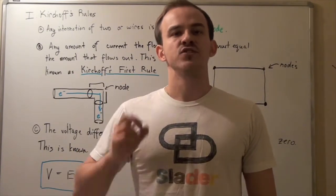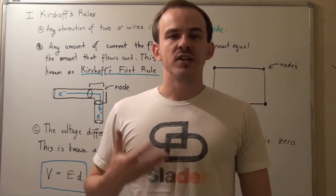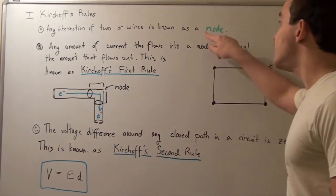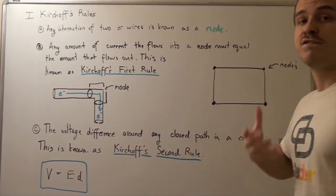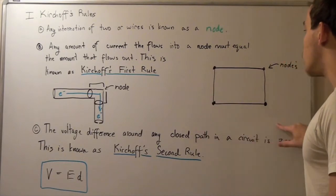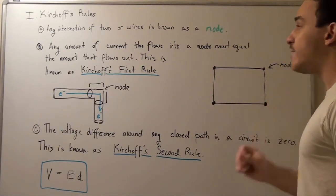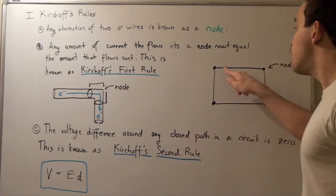Any intersection of two or more wires within a closed circuit is known as a node. If we look at the following rectangular closed circuit, we see that we have four intersections, or four nodes.